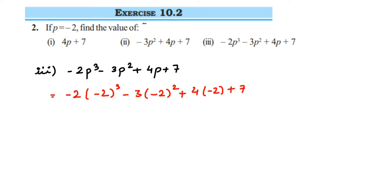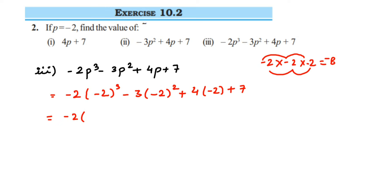So this is equal to minus 2 into (minus 2)³, which means you are multiplying minus 2 here 3 times. So it will be 2 to the power 3, which gives 8. Minus into minus is plus, plus into minus is minus. Or if you see an odd number of negative signs — here we have 3 negative signs, and 3 is an odd number — so your final answer is going to have a negative sign. You can remember it that way.